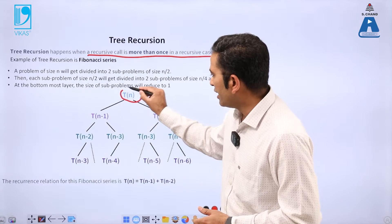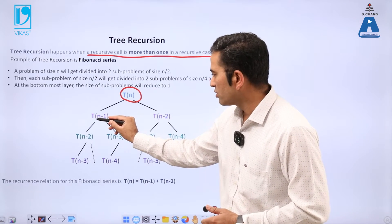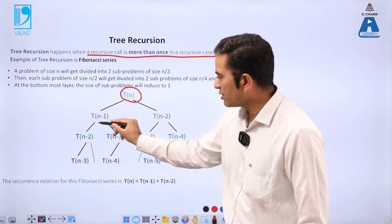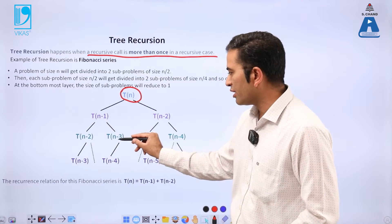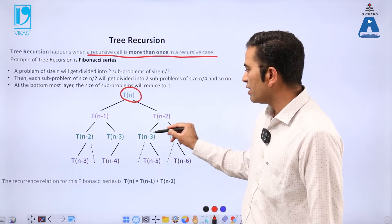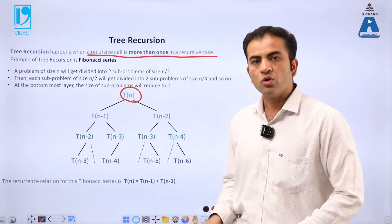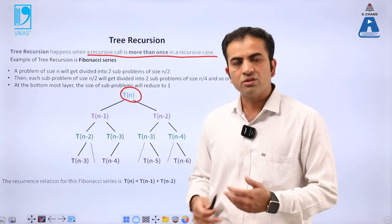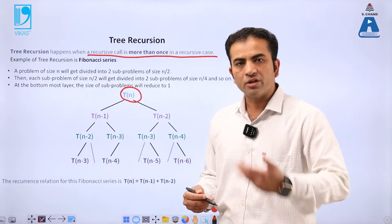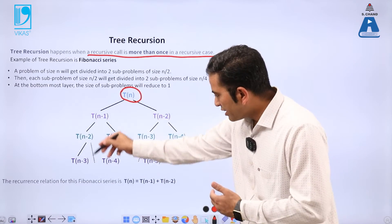In tree recursion, one term is divided into two equal parts — a first part and a second part. Then the first part is again divided into two more parts, and that second part is also divided into further parts. This process continues until we reach our solution.